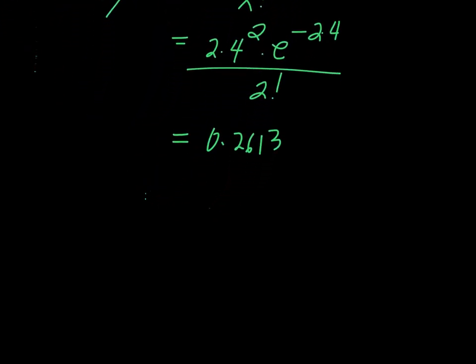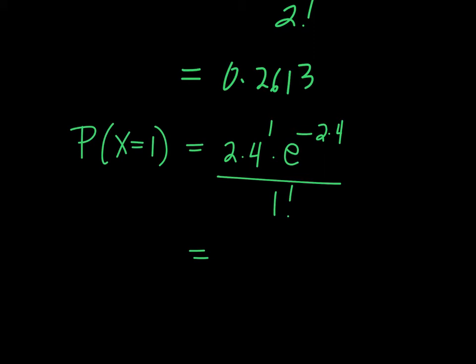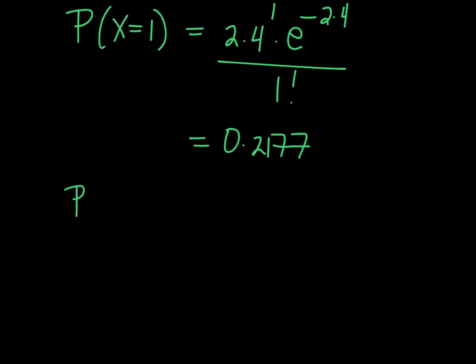For P(X = 1) and P(X = 0), just repeat the process. P(X = 1) is 2.4 raised to 1, times e raised to negative 2.4, divided by 1 factorial. My tip: when solving Poisson distribution, do not delete what you've entered in the calculator — just change the relevant values. Computing this gives 0.2177.